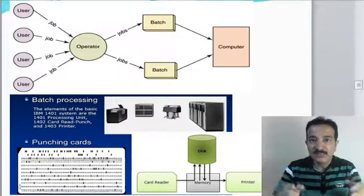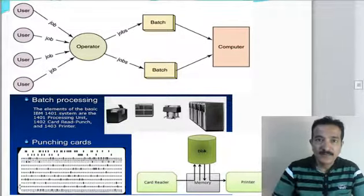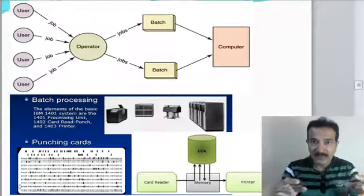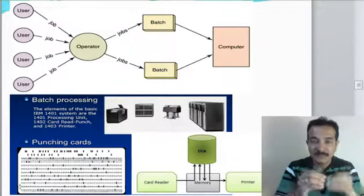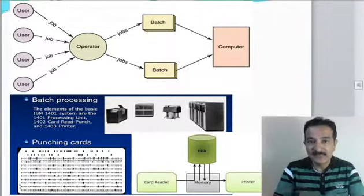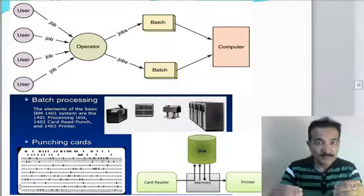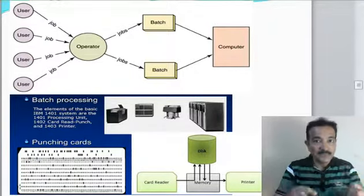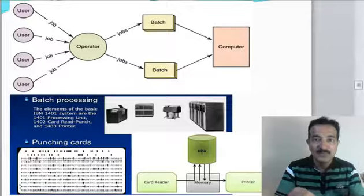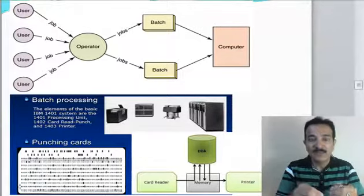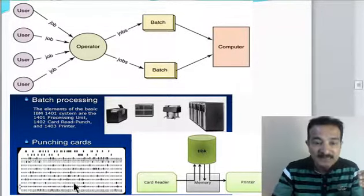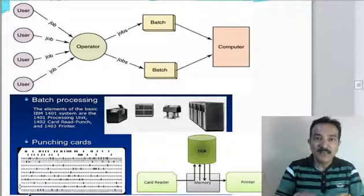In a payroll system there are basically two things. First, the computer needs to have all the data of the employee and get the current month's number of days the person has come to work. The second batch process is that it will take the employee data — fixed salary and number of days worked — do the calculation, and print the current month's salary.